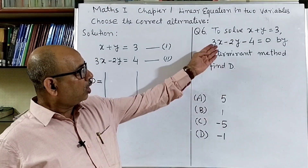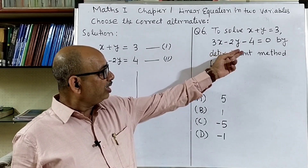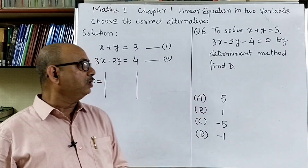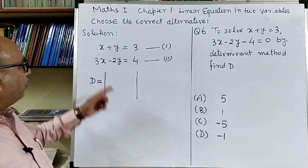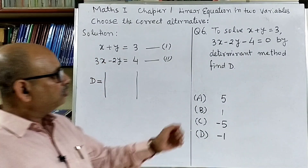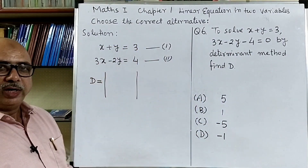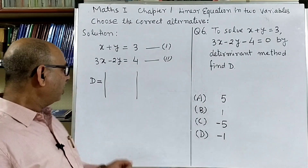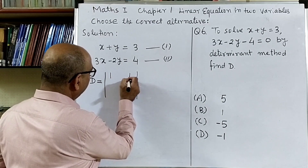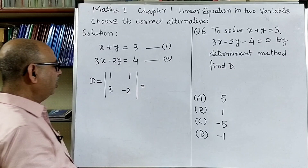Question number six: to solve x plus y is equal to 3 and 3x minus 2y minus 4 is equal to 0 by the determinant method, find the value of D. The first equation is x plus y equals 3. Transposing 4 in the second equation gives 3x minus 2y equals 4. For the value of D, we take the coefficients of x and y: 1, 1 from the first equation and 3, minus 2 from the second.